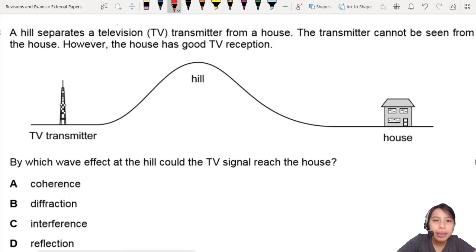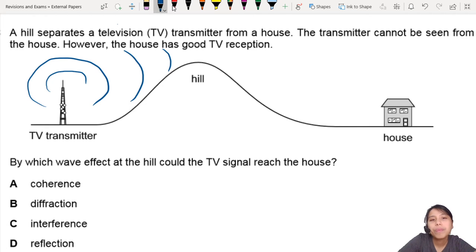But anyway, what's happening here is a wave phenomenon called something, something, something. You also know the TV transmitter will transmit waves circularly, okay? I'm just going to draw this side. But somehow, this wave will bend around the hill and reach your house.